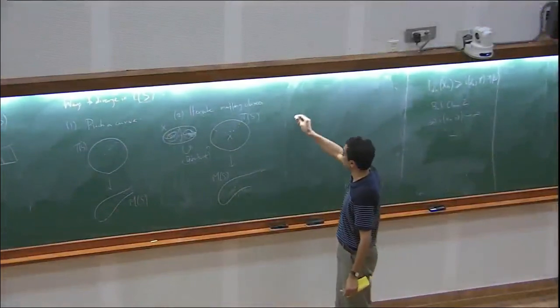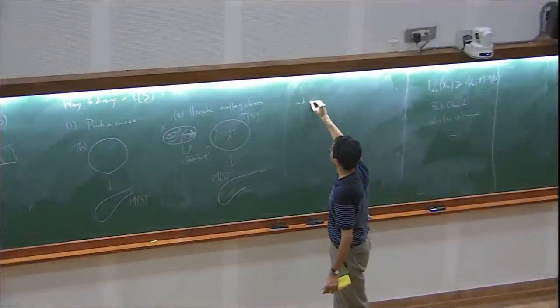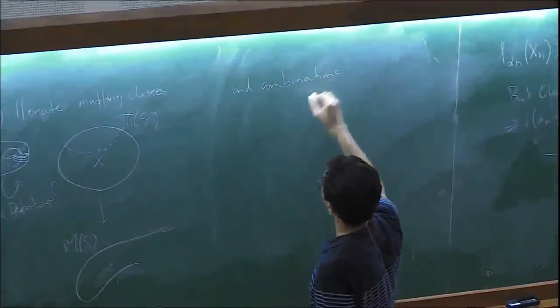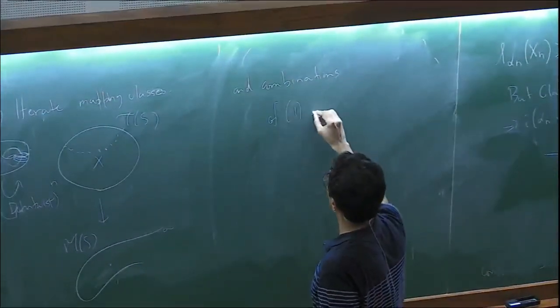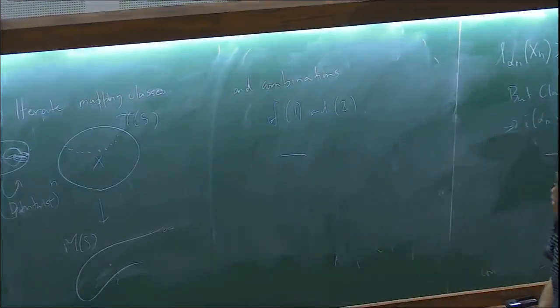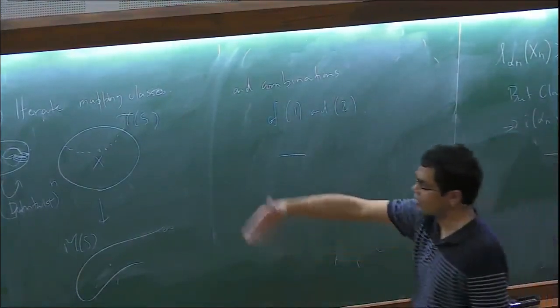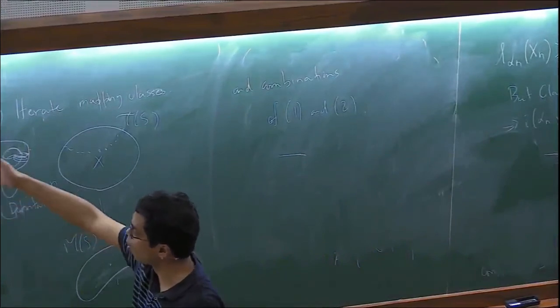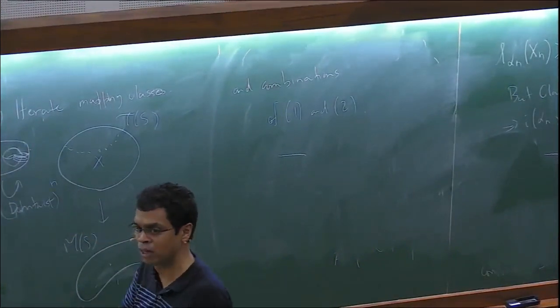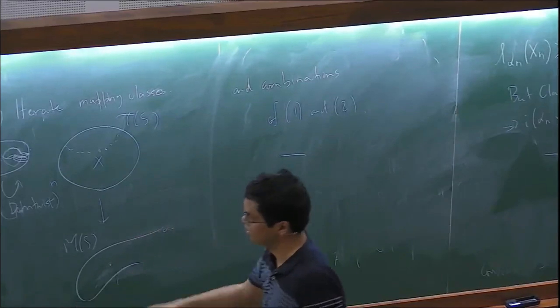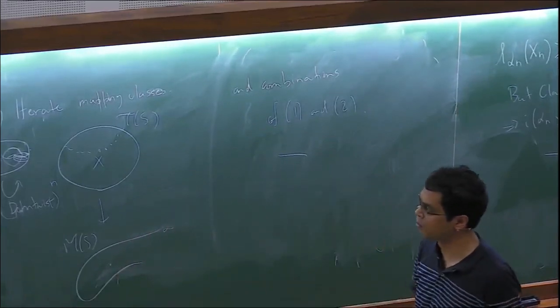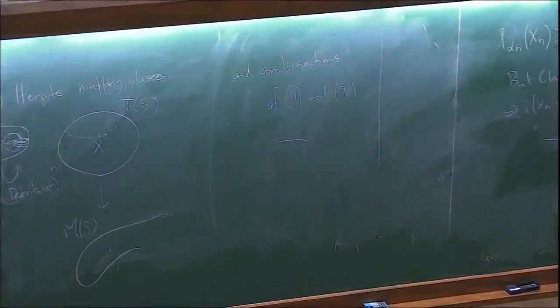You can do combinations of these two ways of diverging. There are various problems to think about — for example, what's the boundary of Teichmüller space? You've been looking at boundaries of hyperbolic spaces; it turns out Teichmüller space is not quite a hyperbolic space, but you can still talk of some kind of boundary. There are various questions that you can continue with.